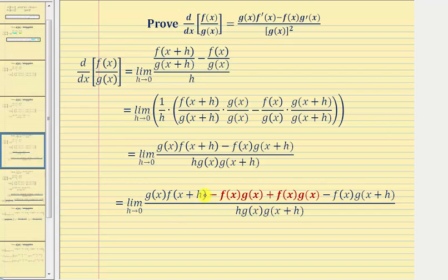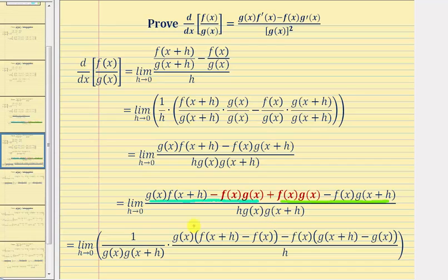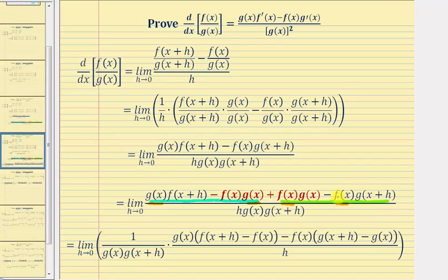Next we write this fraction as a product and factor the terms in the numerator. In the denominator we pull out the factors of g(x) times g(x+h) and write them as one over those two factors. In the numerator, the first two terms share a common factor of g(x), giving g(x) times the quantity f(x+h) minus f(x). The remaining two terms share a factor of f(x), and factoring out negative f(x) gives minus f(x) times the quantity g(x+h) minus g(x).